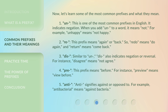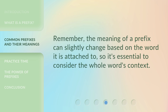5. Anti — 'anti' signifies 'against' or 'opposed to'. For example, 'antibacterial' means 'against bacteria'. Remember, the meaning of a prefix can slightly change based on the word it is attached to, so it's essential to consider the whole word's context.